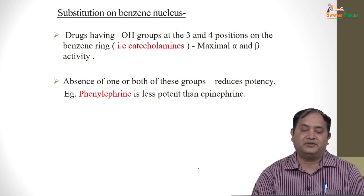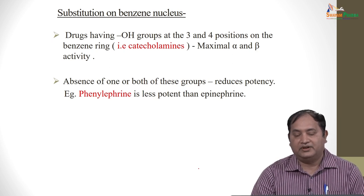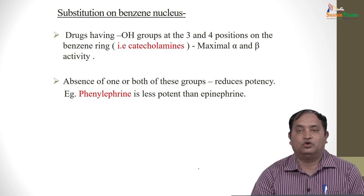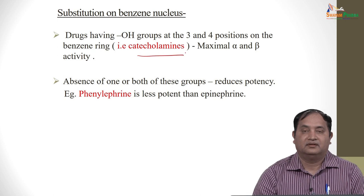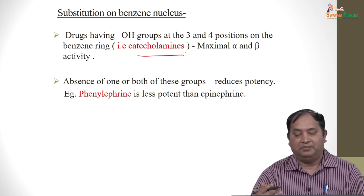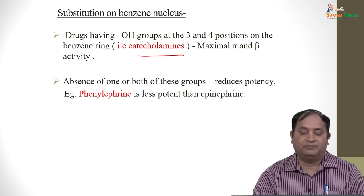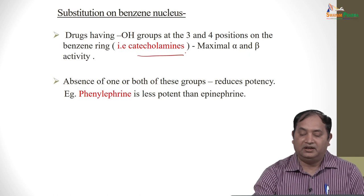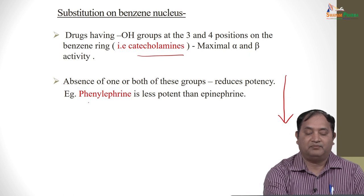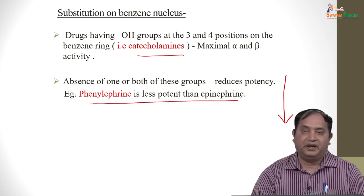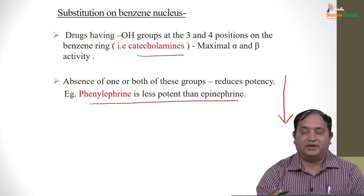Drugs having hydroxyl groups at positions 3 and 4 on the benzene ring — the catecholamines — have maximal affinity for alpha and beta activity. In the absence of these two groups, potency at receptor binding is reduced. For example, phenylephrine is less potent than epinephrine.